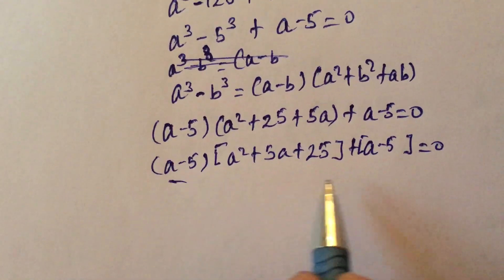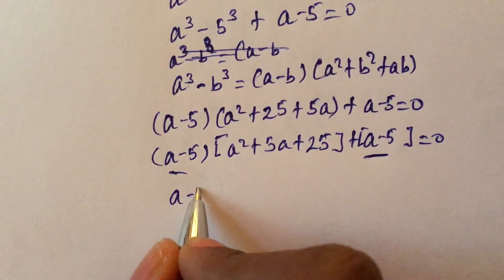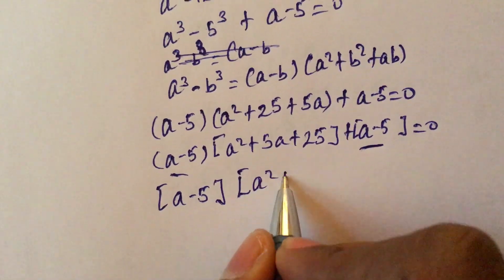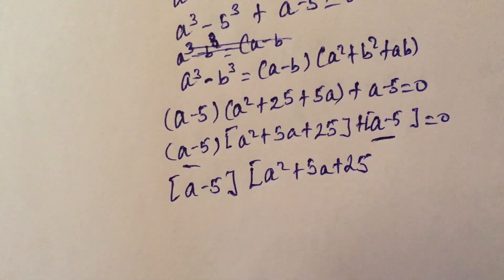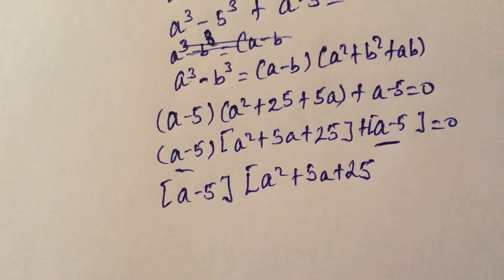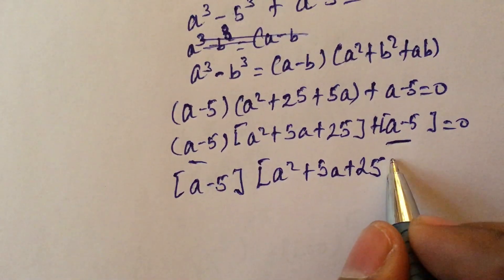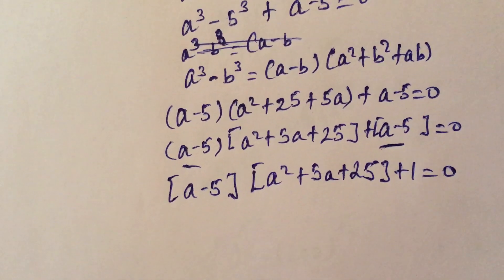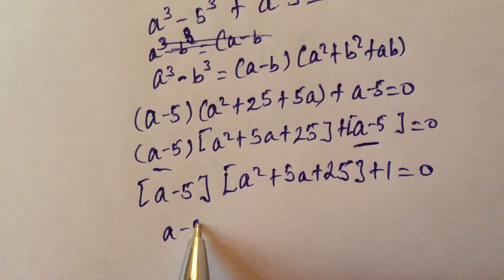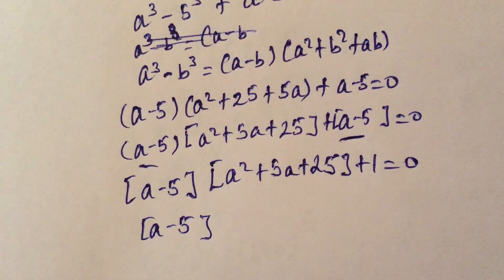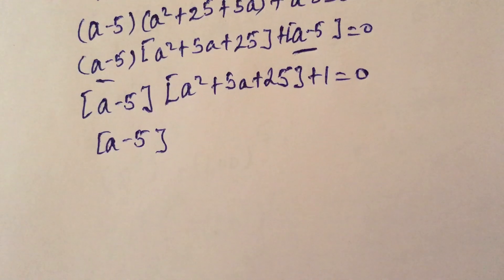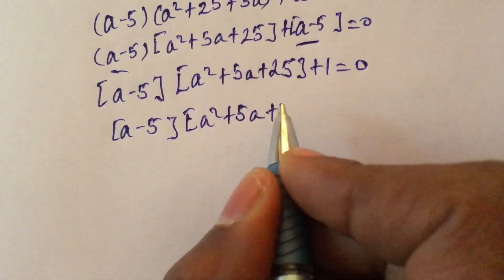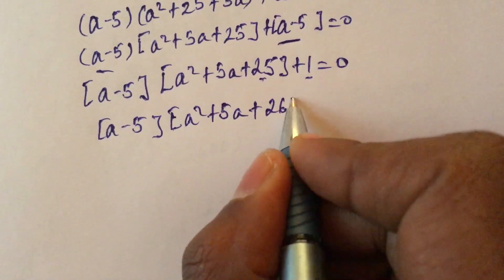We take the common factor a minus 5: a minus 5 times a squared plus 5a plus 25 plus 1 equals 0. This simplifies to a minus 5 times a squared plus 5a plus 26 equals 0.